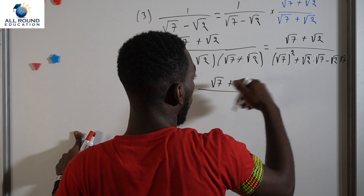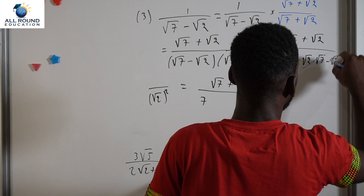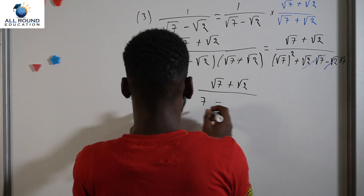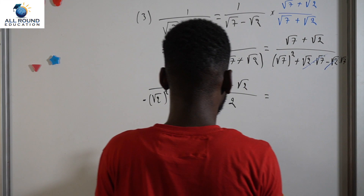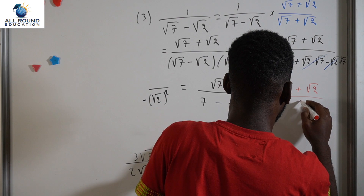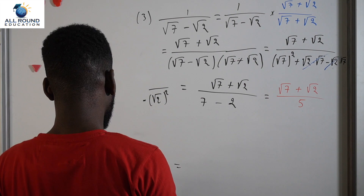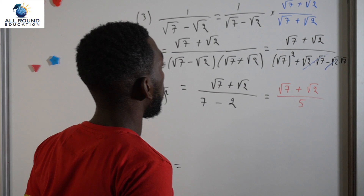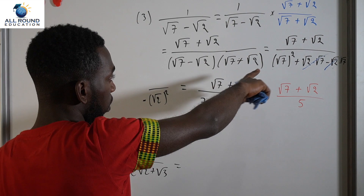At the top we still have root 7 plus root 2. At the bottom, root 7 squared is just 7. The middle terms cancel — positive and negative — and we end up with minus root 2 squared, which is 2. So the bottom becomes 7 minus 2, which is 5. The final answer is root 7 plus root 2 over 5.